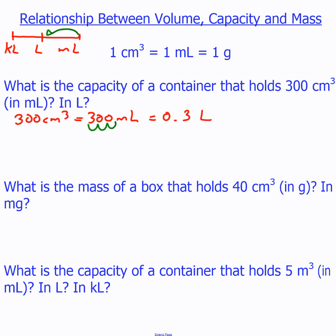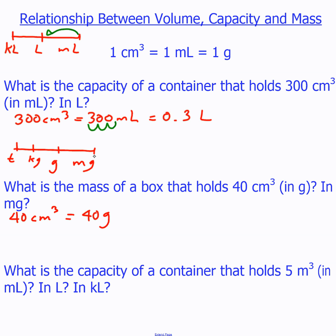What is the mass of a box that holds 40 centimeters cubed, in grams? Since one centimeter cubed equals one gram, 40 centimeters cubed equals 40 grams. To convert to milligrams: on our chart, milligrams is to the right of grams, so we move three to the right. Finding our decimal and moving one, two, three to the right gives us 40,000 milligrams.